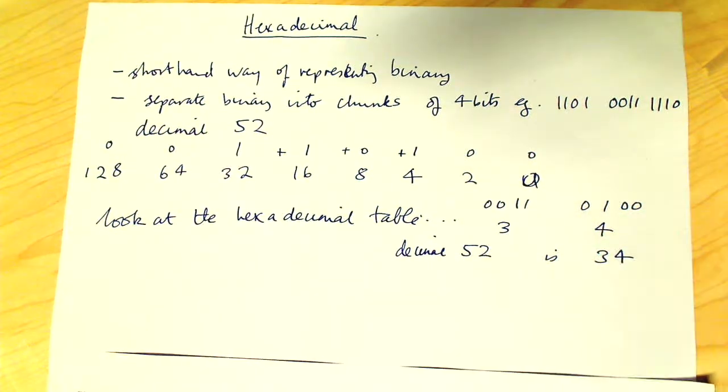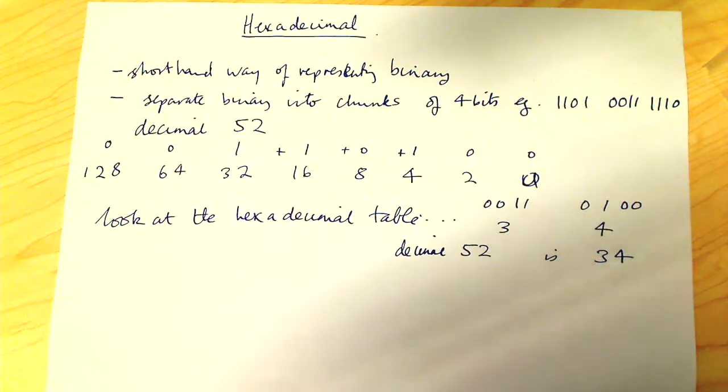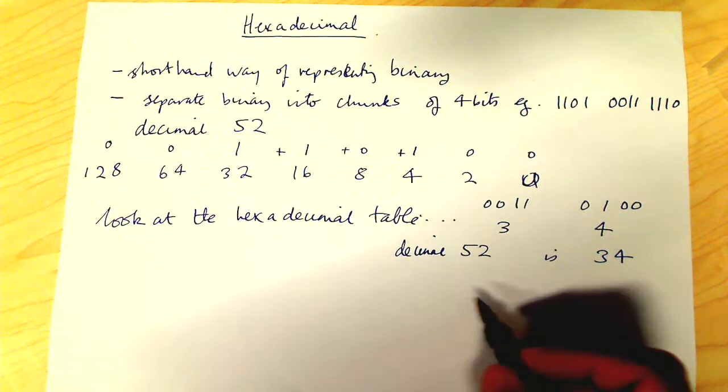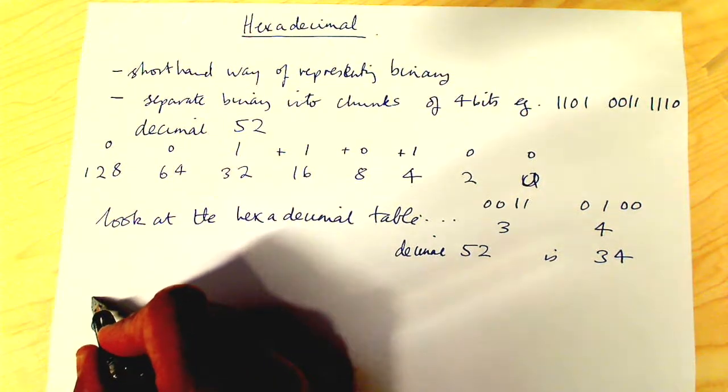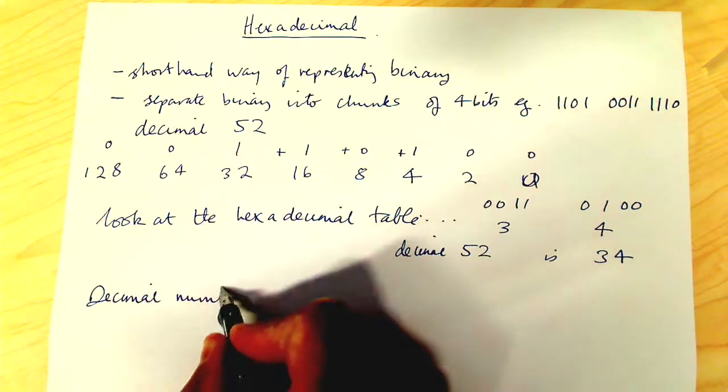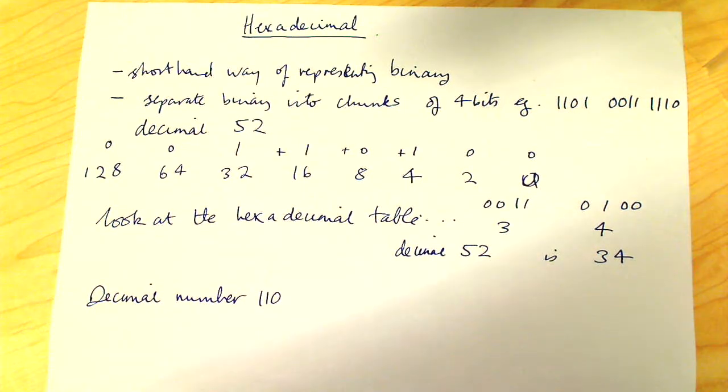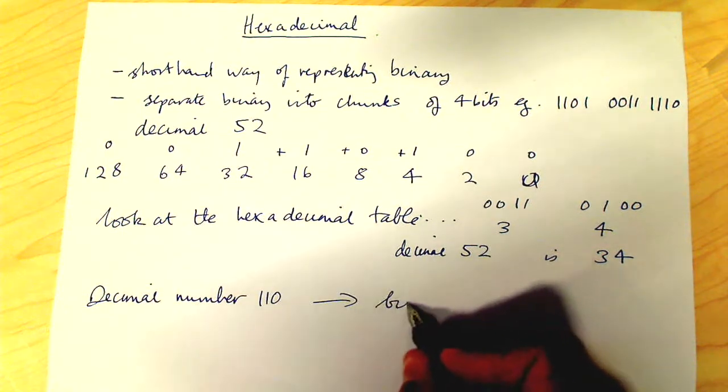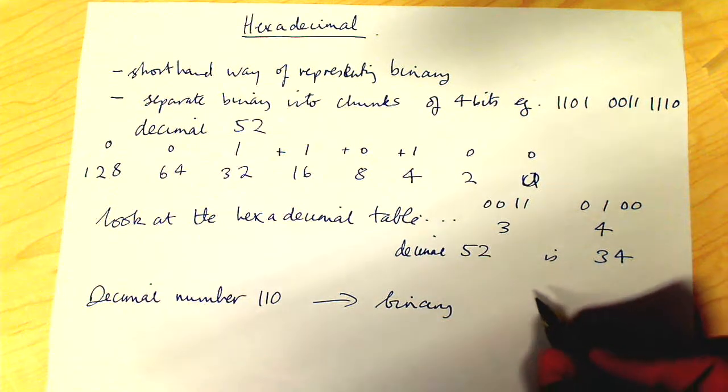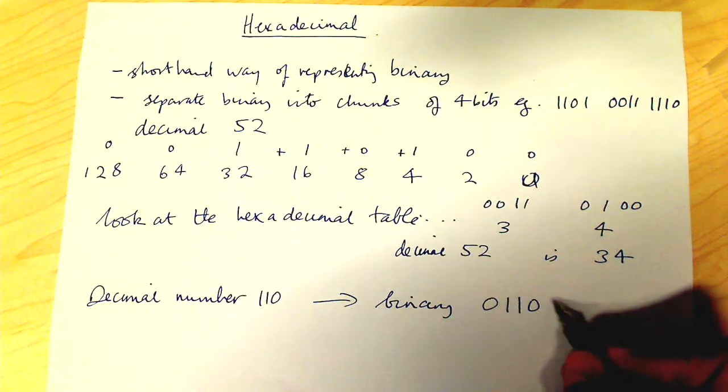What we're going to do now is have a look at a slightly more complicated example that uses the letters. So we're going to look at the decimal number 110. In binary, this is as follows. I'm not going to do the calculation for you, you can check this yourself if you wish. It's 01101110.